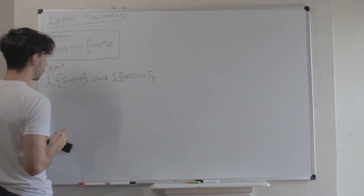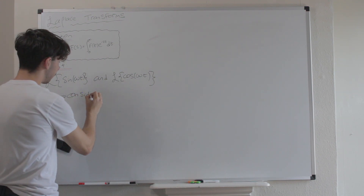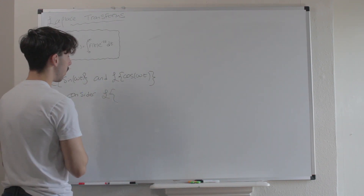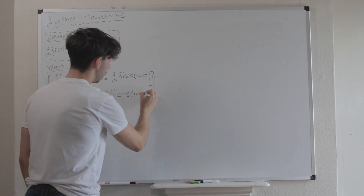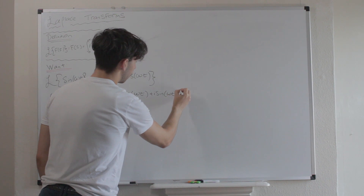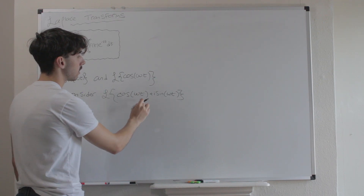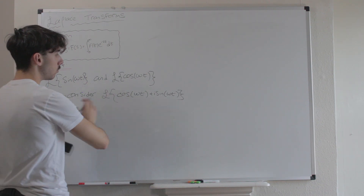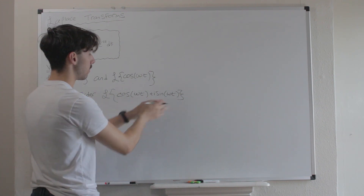Let me show you exactly what I mean. Let's consider, for just one moment, the Laplace transform of something a bit different to sine and cos. What about the Laplace transform of cos(ωt) + i·sin(ωt)? Well, of course this can be written as e^(iωt) by Euler's formula. This is not the Laplace transform of cos(ωt) or sine(ωt) individually — it's cos(ωt) + i·sin(ωt).